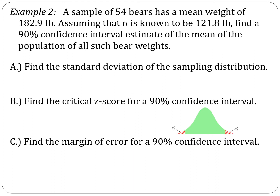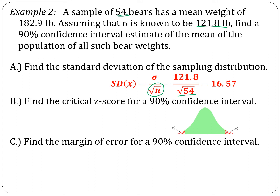Next example: a sample of 54 bears has a mean weight of 182.9 pounds. Assuming that sigma is known to be 121.8 pounds, find a 90% confidence interval estimate of the mean of the population of all such bear weights. Standard deviation: sigma over radical n. Sigma equals 121.8, divided by the square root of the sample size of 54 bears, gives us a standard deviation for the sampling distribution of 16.57.